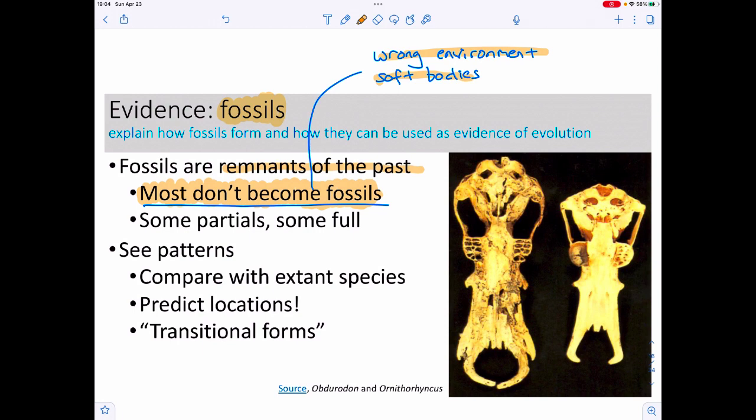Fossils are particularly rare. That said, we have a lot of fossils. Some are partial fossils, some are complete skeletons. When we look at fossils, we tend to see patterns, especially when we look at them with extant species. The two fossils shown here—the one on the right is Ornithorhynchus, the platypus. The one on the left is Obdurodon, a fossil that has teeth, which is kind of strange because the platypus doesn't have teeth. This could be a relative of the platypus that had teeth.